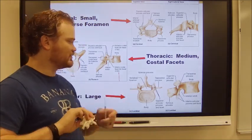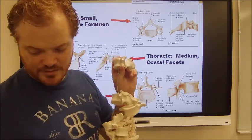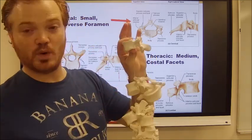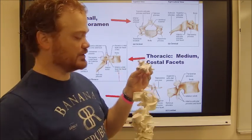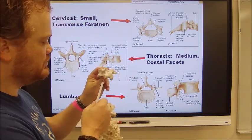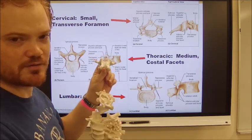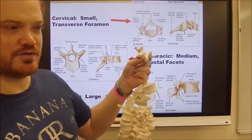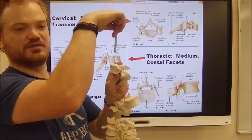Lumbar vertebrae tend to be much larger — way bigger than other vertebrae. Not only do they look different, but they have no costal facets, so you know it's lumbar. If it looks like a moose — nose, horns, ears — it's probably a lumbar vertebra. On your test: what kind of vertebra is that? Lumbar. How many are there? Five. What is this structure? The body.